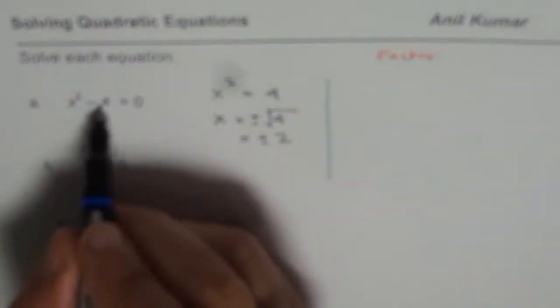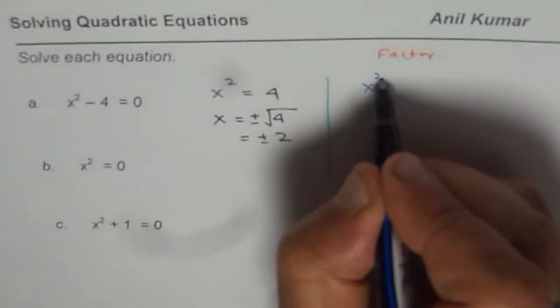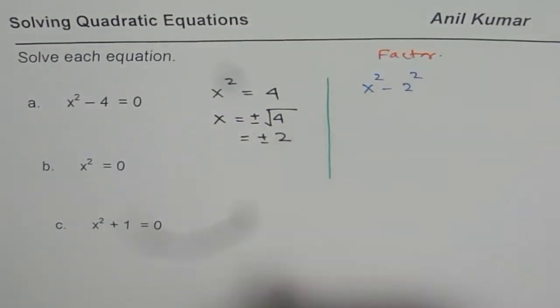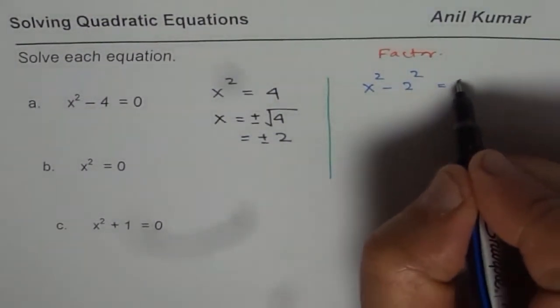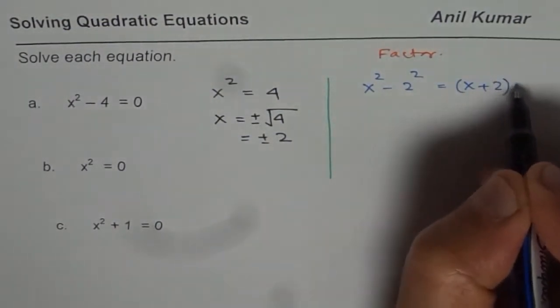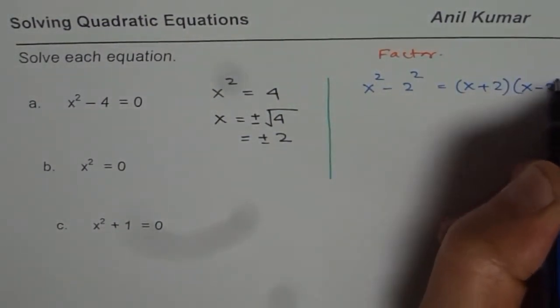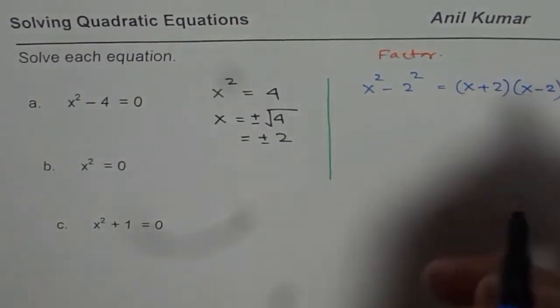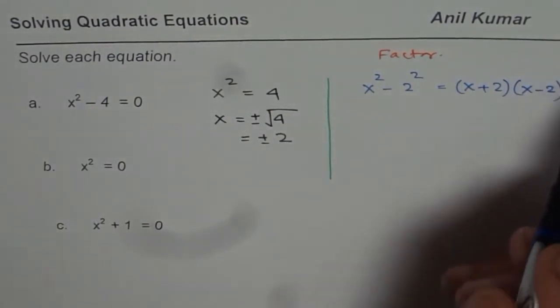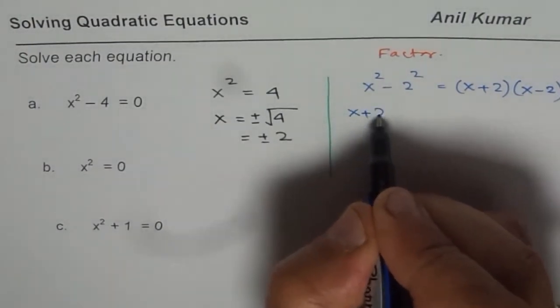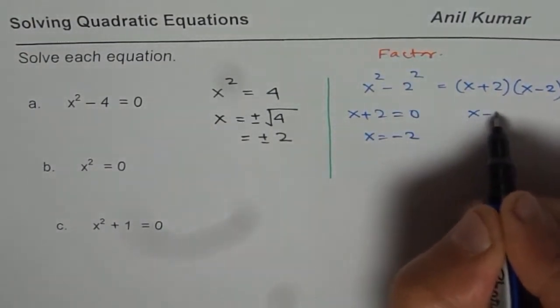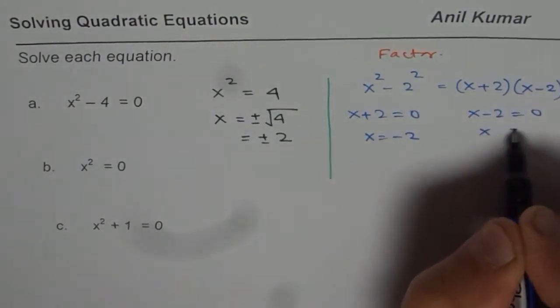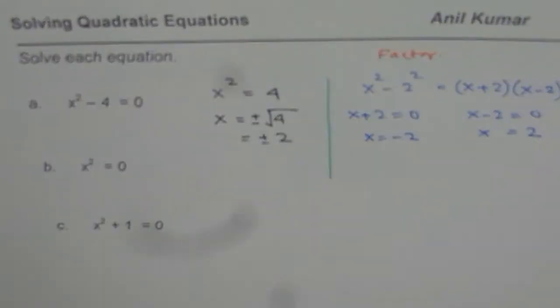x square minus 4 could be written as x square minus 2 square. It is difference of squares, so you could always write this as x plus 2 times x minus 2. That is to be equal to 0. That means each factor we can equate to 0. So if x plus 2 equals to 0, then x equals to minus 2. And if x minus 2 equals to 0, then x equals to plus 2. So we get the same answers.